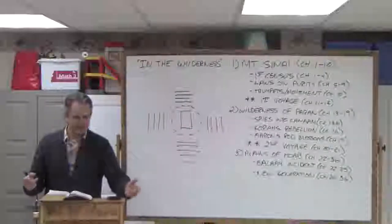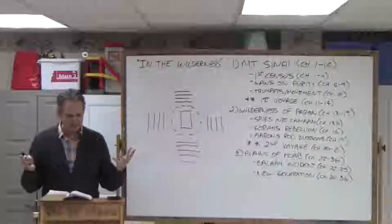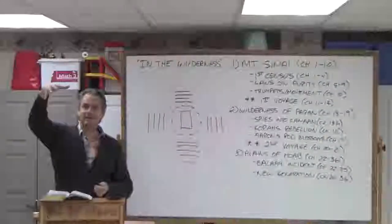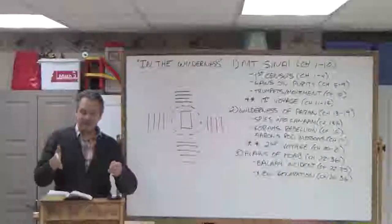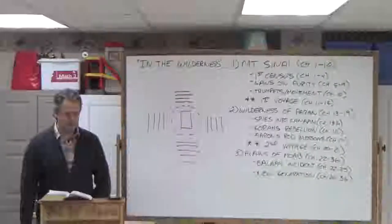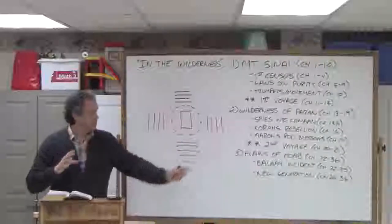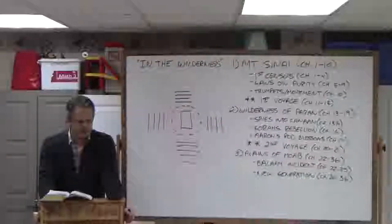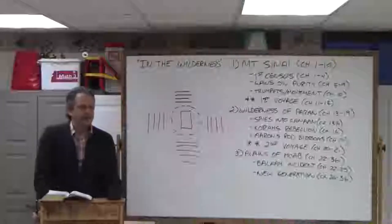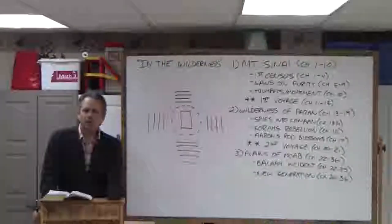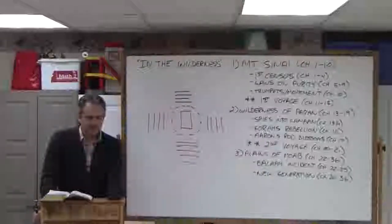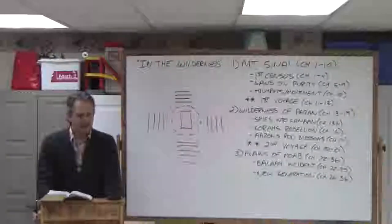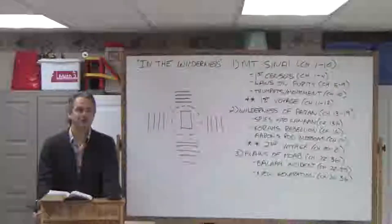Laws about purity, chapters 5 through 9. Silver trumpets in chapter 10. Chapter 10 is interesting because he has them make silver trumpets. And the purpose of the trumpets is that the cloud is about to lift off of the tabernacle for the first time. Exodus 19:1 tells you the date of when they got to Sinai. And Numbers 10 tells you that one year later, they're leaving Mount Sinai for the first time.